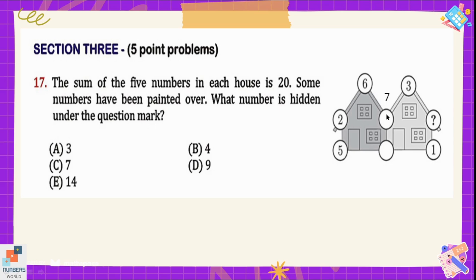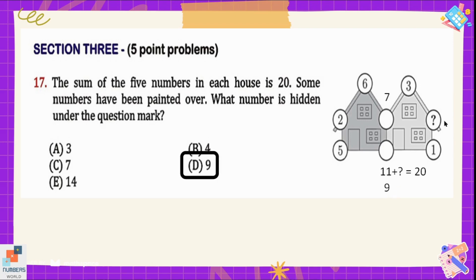These two circles are common for both the dark grey and light grey house. So we can use this 7 for the light grey house as well — 7 will be split into those two circles. 7 plus 3 plus 1 equals 11, and the total should be 20, so 11 plus 9 equals 20. The number under the question mark is 9, so option D is the correct option.